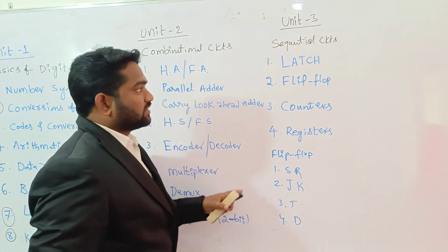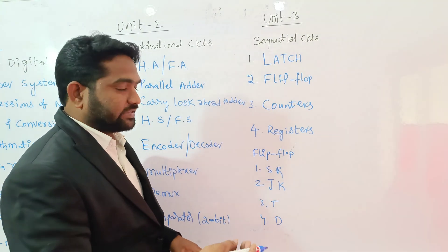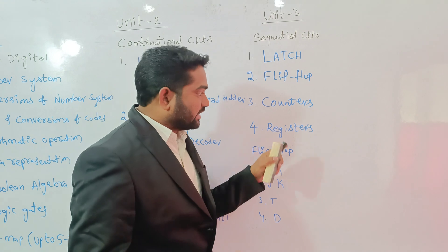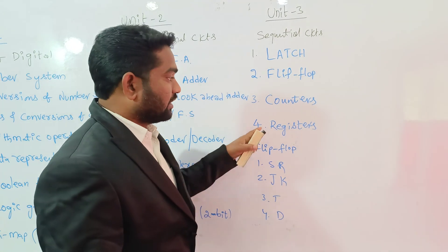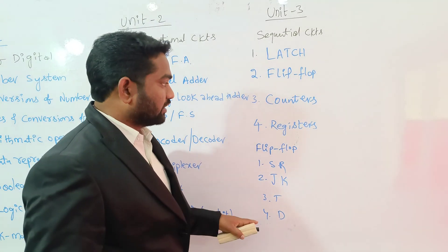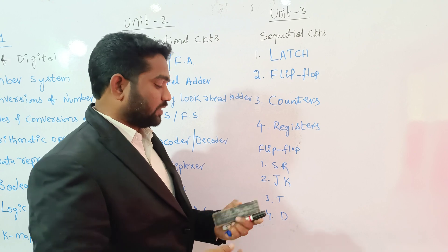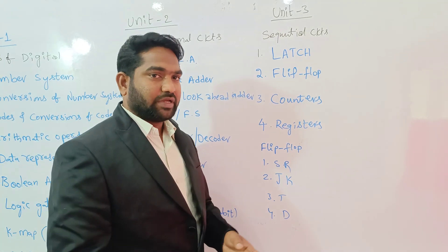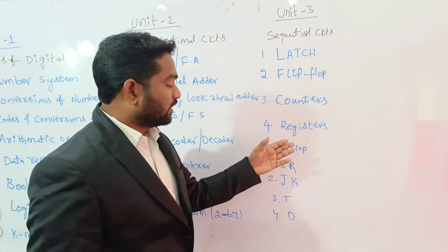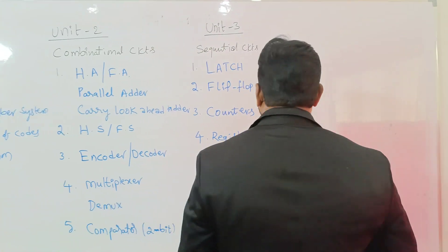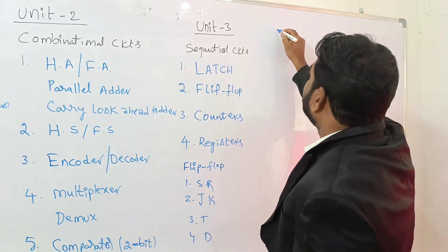After completion of flip-flops we will learn Counters. There are two types of counters: synchronous and asynchronous. After counters we will learn Registers. There are four types: serial-to-parallel, parallel-to-serial, serial-to-serial, and parallel-to-parallel — showing how data transfers from one flip-flop to another. A register is basically a storage element. That covers unit number three.